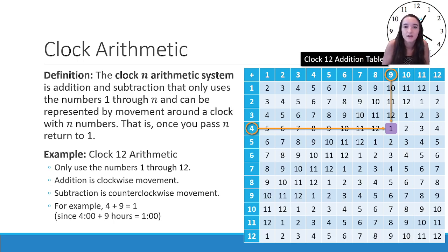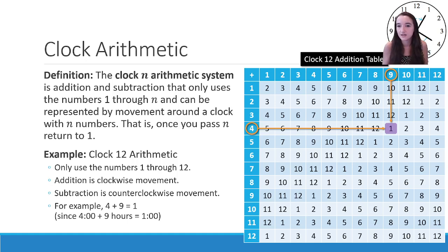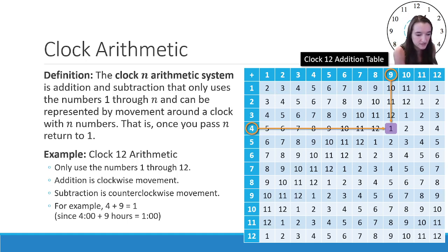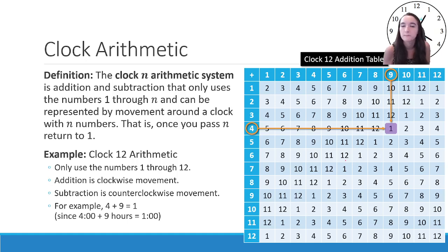I can fill out this whole Clock 12 addition table. If I do 1 o'clock plus 1 hour it's 2; 1 o'clock plus 2 hours is 3. Notice that the only numbers appearing in this table are 1 through 12 — those are the only numbers possible on a clock. There's a nice pattern to it: the numbers cycle through 2, 3, 4, 5, 6, 7, 8, 9, 10, 11, 12, and then back to 1, giving the table a nice symmetry.